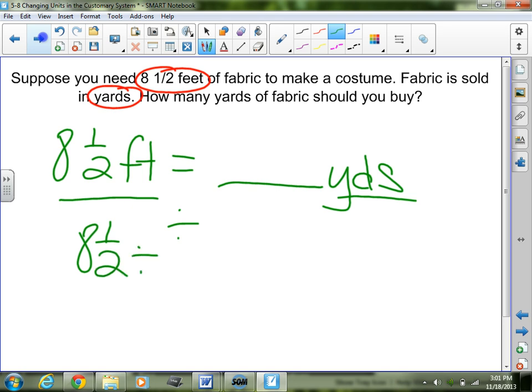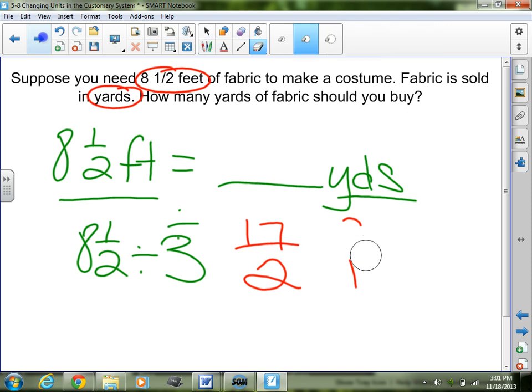So I need 8 1/2 feet divided by however many feet are in 1 yard. I know that there are 3 feet in 1 yard, so I'm going to divide by 3. 8 1/2 divided by 3. Since I'm remembering my fractions, I know that in order to divide this, I first am going to change the mixed number to an improper fraction. 8 times 2 is 16, plus 1 is 17. Keep that over 2.